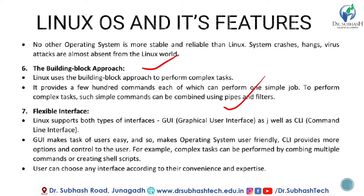The seventh feature is a flexible interface. Linux supports both types of interface: graphical user interface (GUI) as well as command line interface (CLI). GUI makes tasks easy and makes the operating system user-friendly, while CLI provides more options and control to the user. Complex tasks can be performed by combining multiple commands or creating shell scripts. Users can choose any interface according to their convenience and expertise.